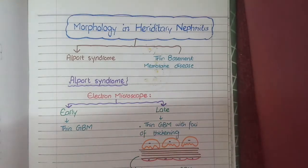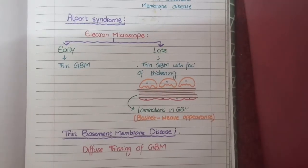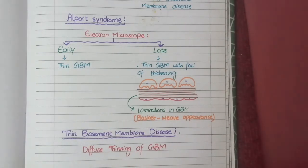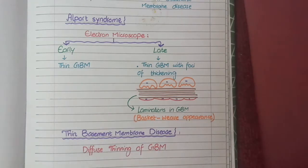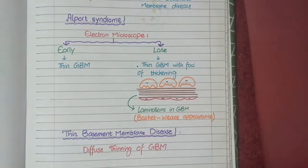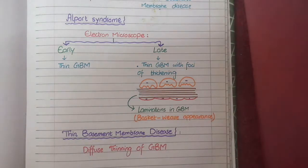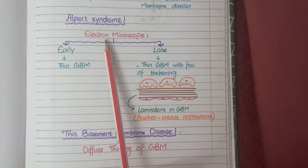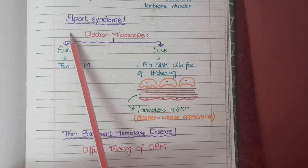Usually in case of any glomerulopathy we discuss the morphological features under the headings of light microscope, electron microscope, and immunofluorescence. But in case of hereditary nephritis, light microscopic changes are usually not apparent or prominent. In the late course of disease you may see features of chronic kidney disease such as glomerular sclerosis, which is the narrowing of glomeruli, tubular atrophy, and interstitial fibrosis.